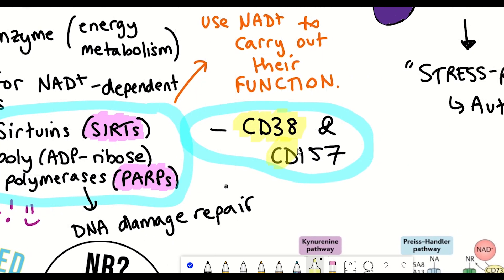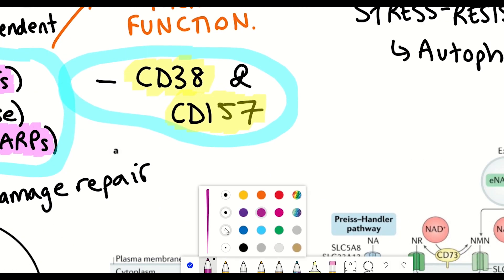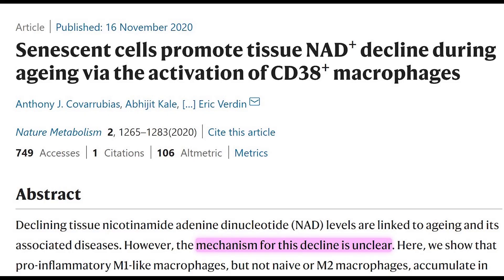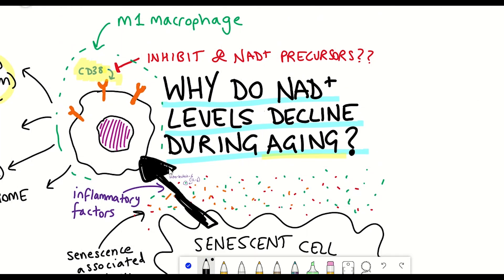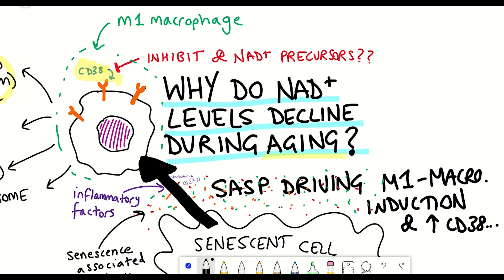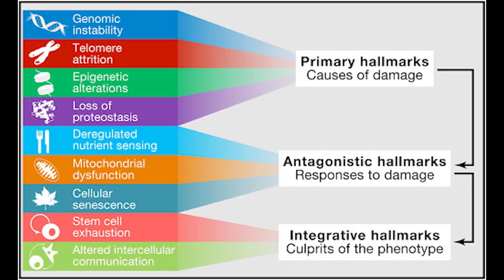The functions of CD38 and CD157 are not currently characterised as well. However, both CD38 and CD157 appear to be upregulated in aging tissues. As mentioned in a previous video, upregulation of CD38 seems to be a major culprit for the decline in NAD+ levels during aging. Interestingly, the increased expression of CD38 — in this case on macrophages, a form of immune cell — seems to occur due to secretion of inflammatory factors by senescent cells in neighboring visceral fat and liver, suggesting NAD+ decline could be linking different hallmarks of aging together.